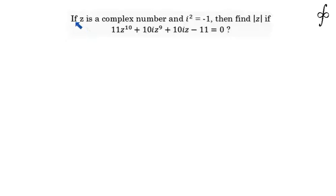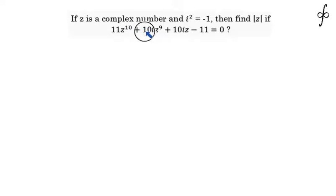Let's discuss this problem: if z is a complex number and iota squared equals minus 1, then find the modulus of z, given the equation 11z to the power 10 plus 10iz to the power 9 plus 10iz minus 11 equals 0.